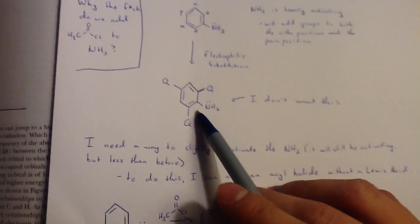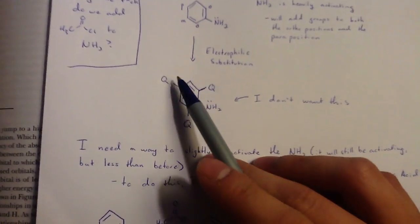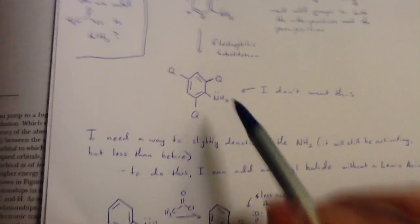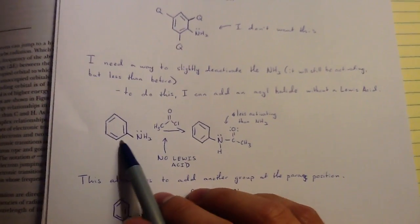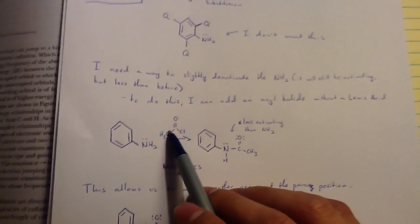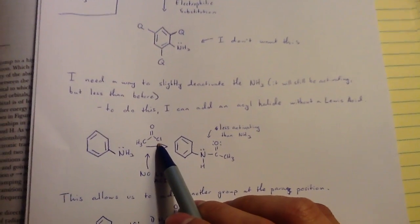So, in order to make sure that maybe I get only one group attached, perhaps at the para position, I want to deactivate this a little bit. And the best way for me to do that is by doing this process over here. So, if I use an acyl chloride here,